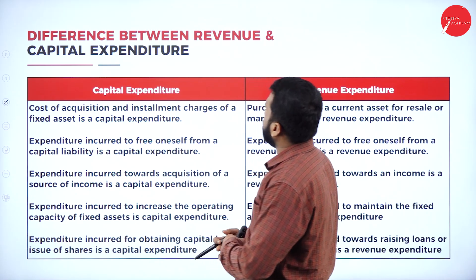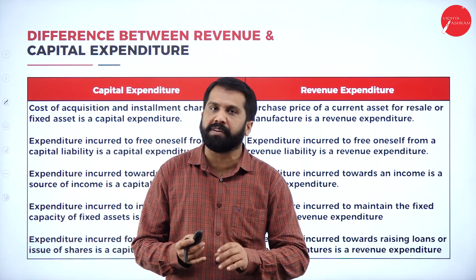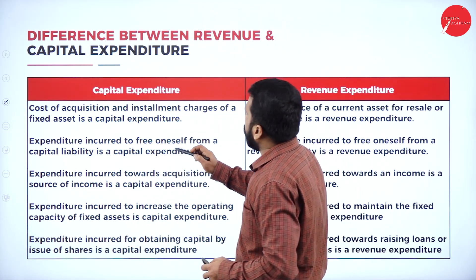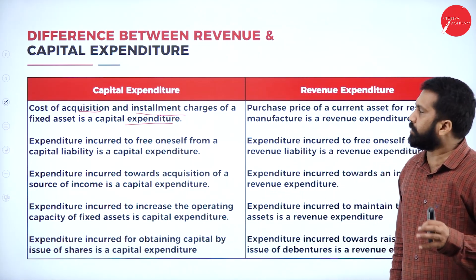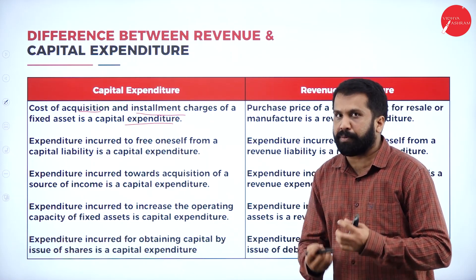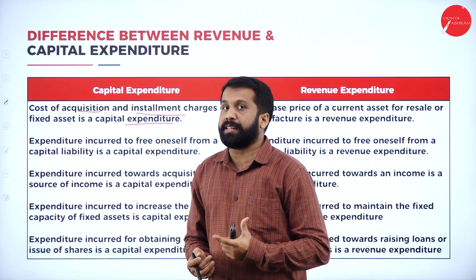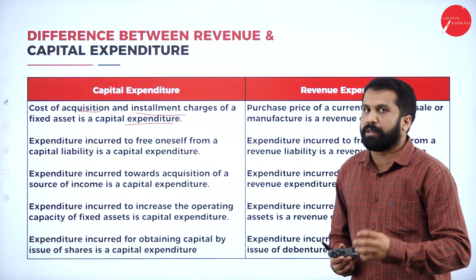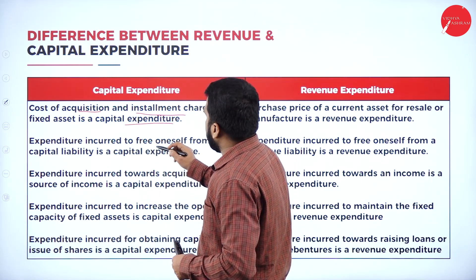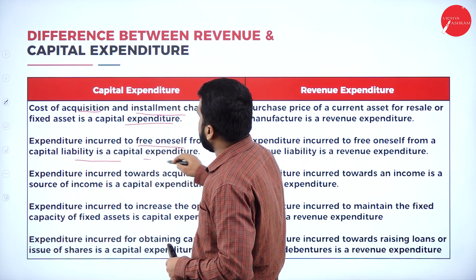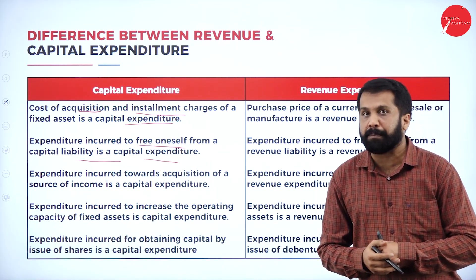Now, the difference between revenue and capital expenditure. Before we talk about revenue expenditure, we will understand what is capital expenditure. Cost of acquisition and installment charges of a fixed asset is a capital expenditure — like whatever you purchase and whatever installment charges apply, that fixed asset is called capital. For example, I bought a mobile — capital expenditure. Also, expenditure incurred to free oneself from a capital liability is a capital expenditure.